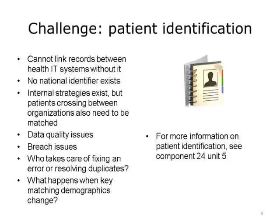Who takes care of the problems? What if you find an error, a duplicate, or two patients incorrectly linked together? How are the duplicates merged or the incorrectly joined separated? How is that going to get resolved within an organization or between organizations? What happens when key matching demographics change — when a name changes, or even when a gender changes? For more information on patient identification, please go to Component 24, Unit 5.